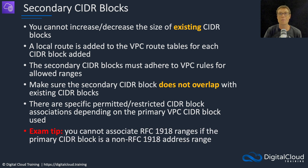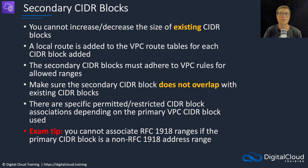One important rule to remember for the exam: you cannot associate RFC 1918 ranges if the primary CIDR block is non-RFC 1918. RFC 1918 specifies ranges of addresses used privately that are never routable on the internet.